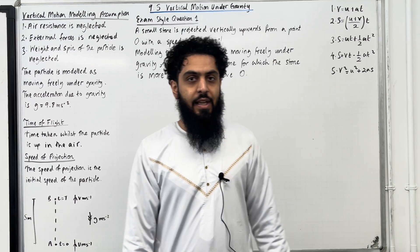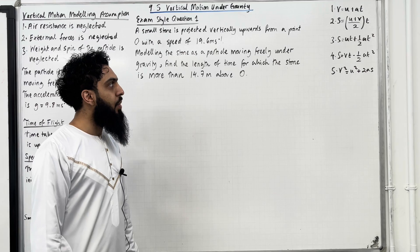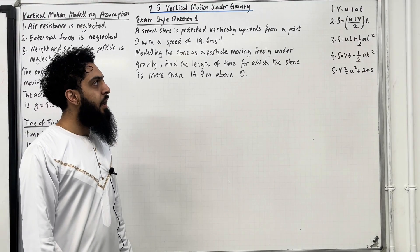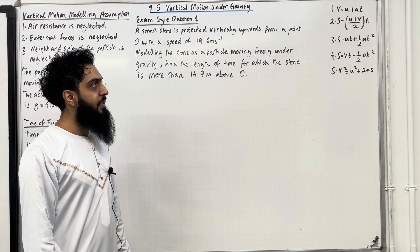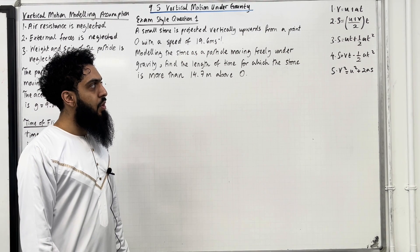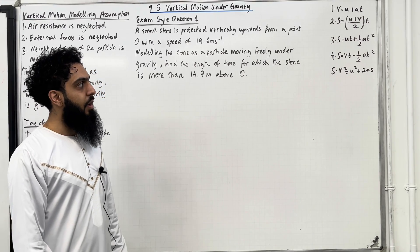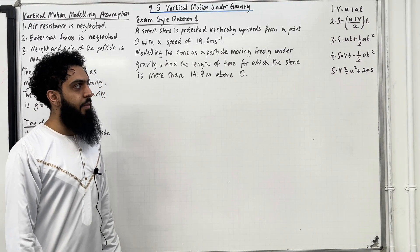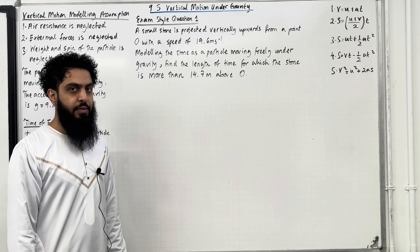Let's have a look at the constant acceleration formulas. Number 1: v = u + at. Number 2: s = (u + v)/2 × t. Number 3: s = ut + ½at². Number 4: s = vt − ½at². And number 5: v² = u² + 2as.